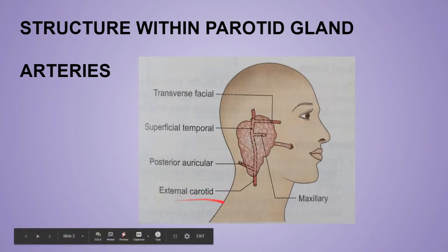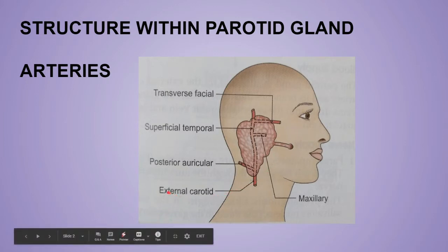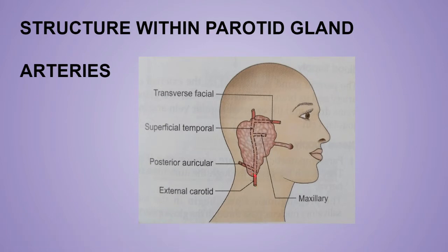First, the arteries. The common carotid artery gives the external carotid artery, which enters the parotid gland from the posteromedial surface. It goes upward and gives its two terminal branches: the maxillary branch and the superficial temporal branch. The maxillary branch emerges out of the gland by the anteromedial surface. The superficial temporal artery gives the transverse facial branch and then emerges out of the gland.